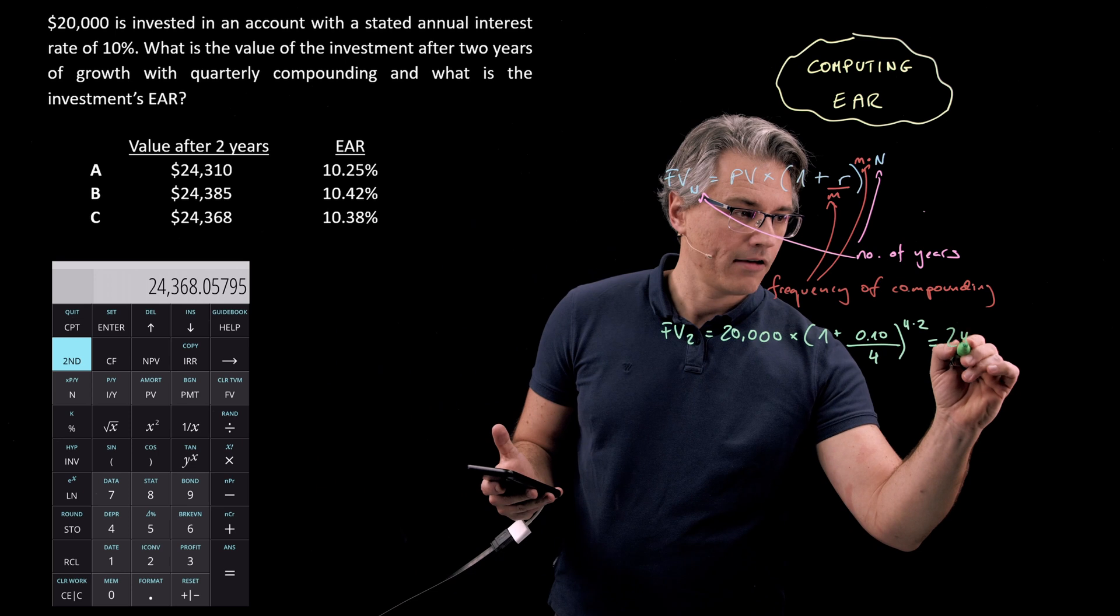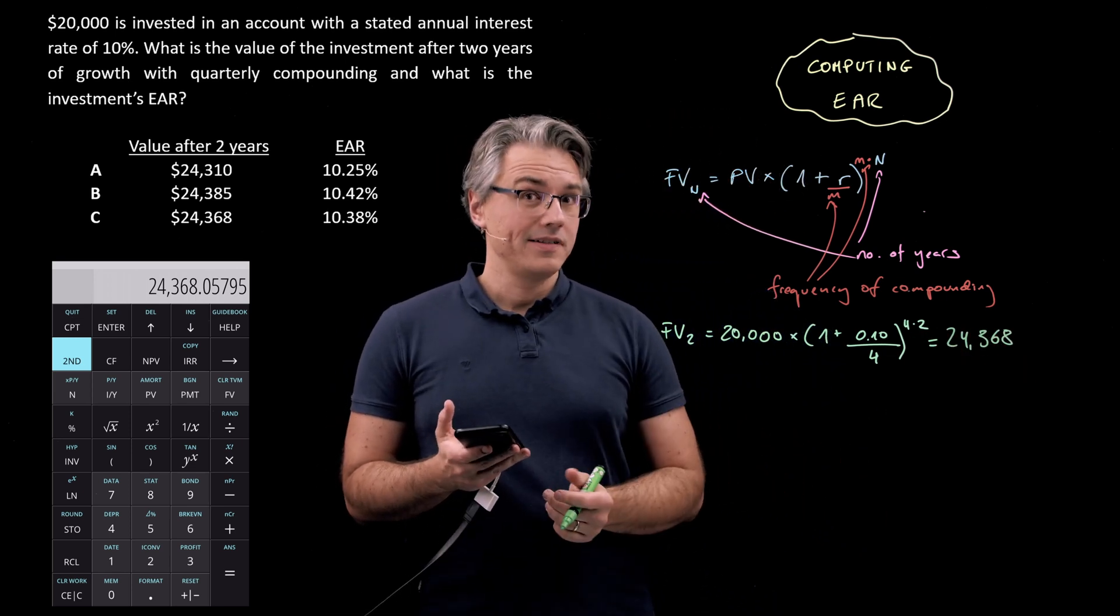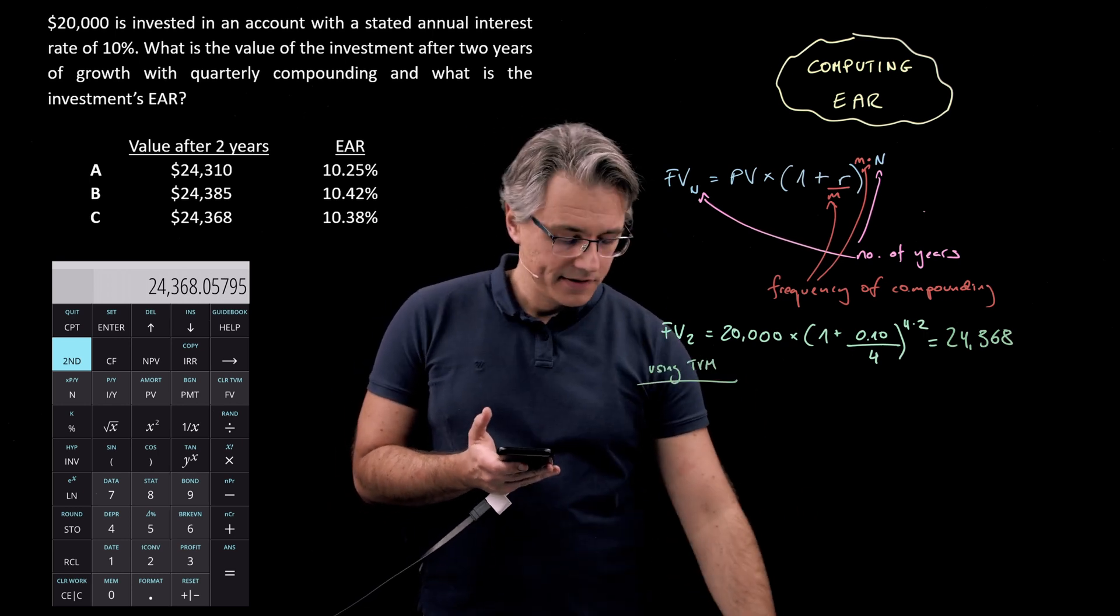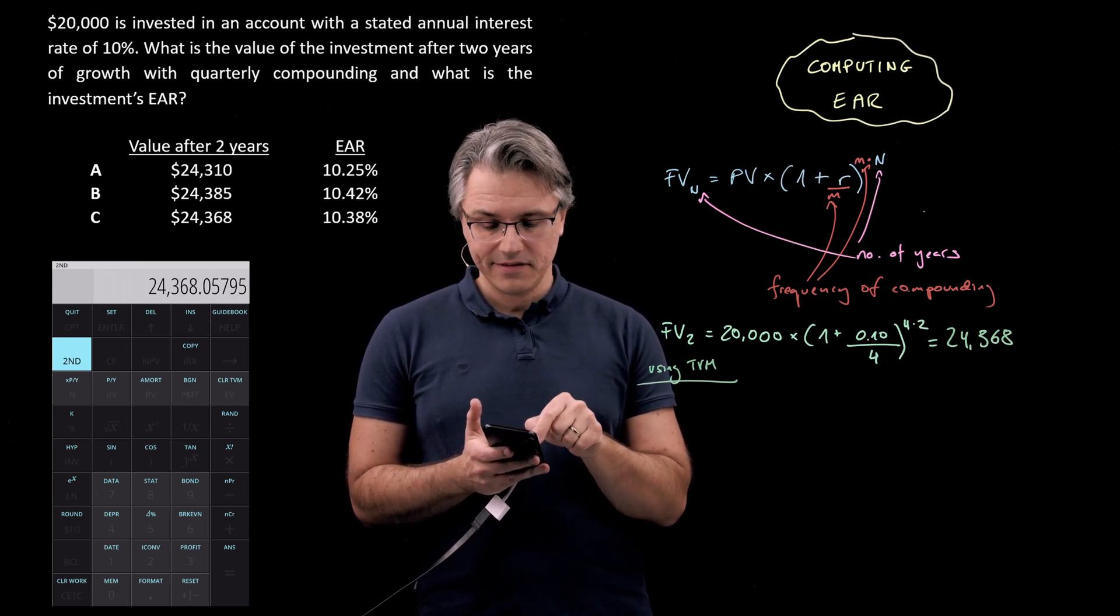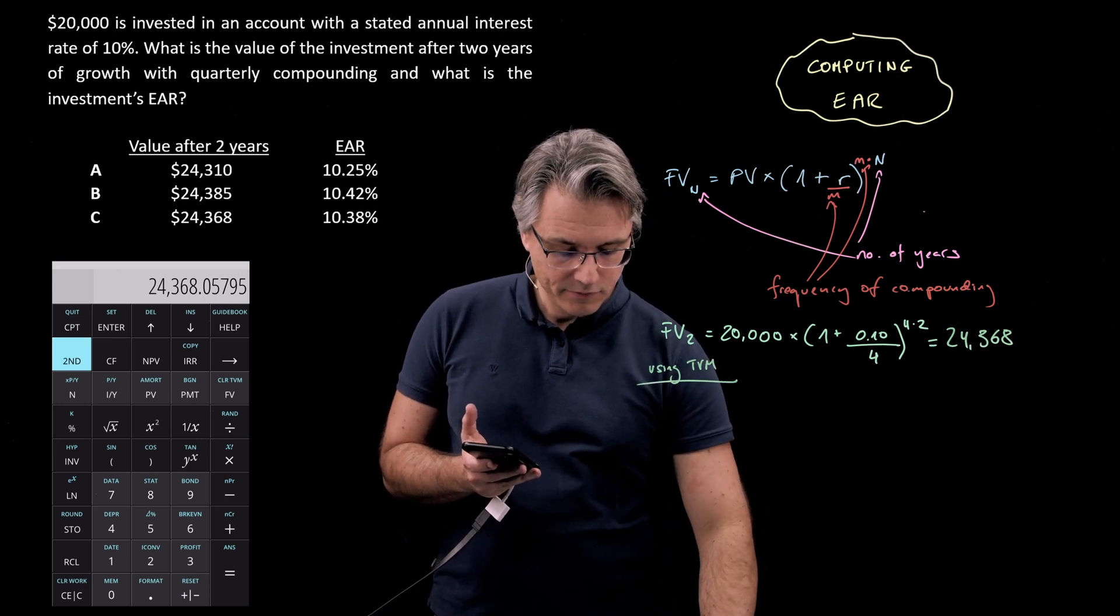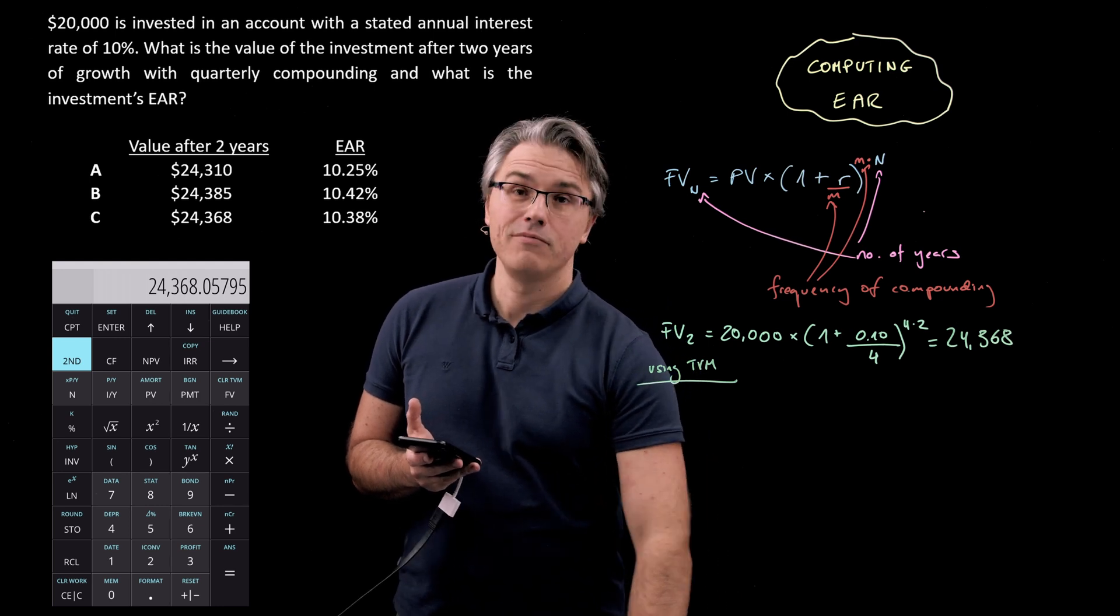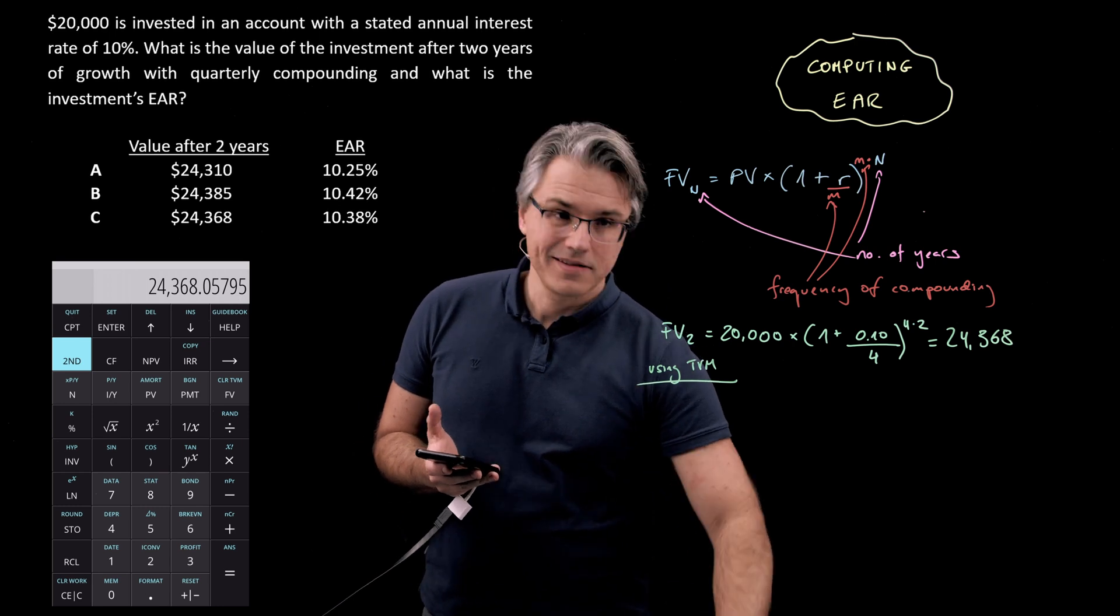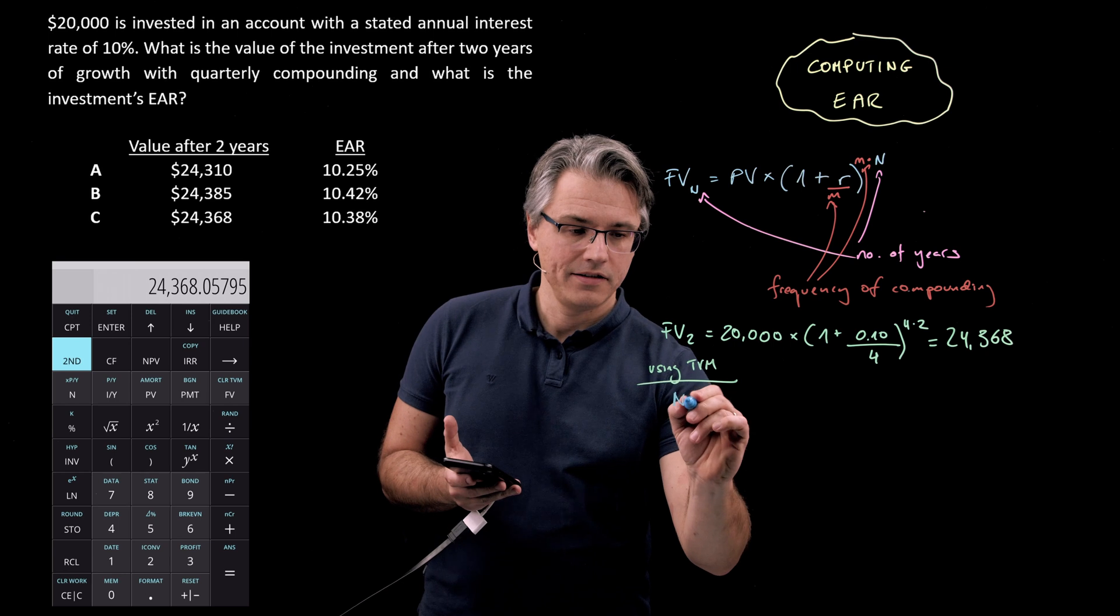Let's write this down. Another way to get to the same result would be to use the TVM worksheet. So if you were using the TVM you'd first need to clear the time value of money worksheet. However for n you would need to have the number of periods not the number of years.